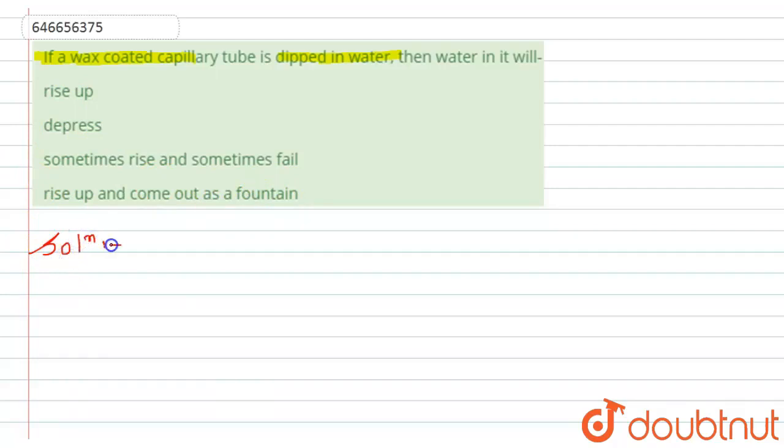According to the question, it is given that we have a capillary tube whose wall is coated with wax.